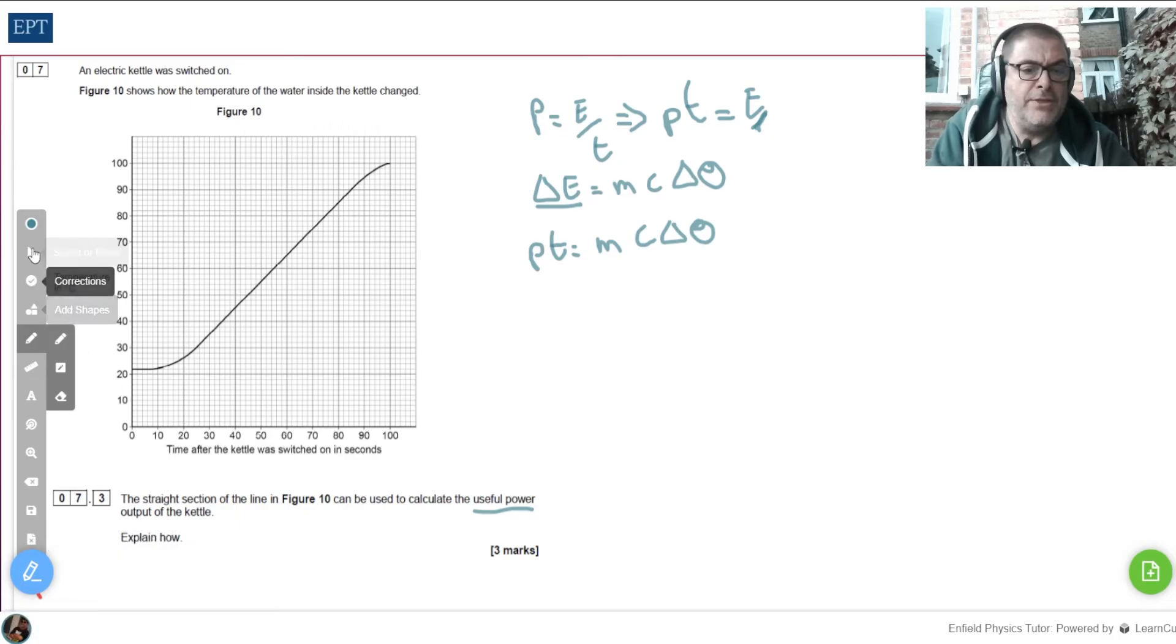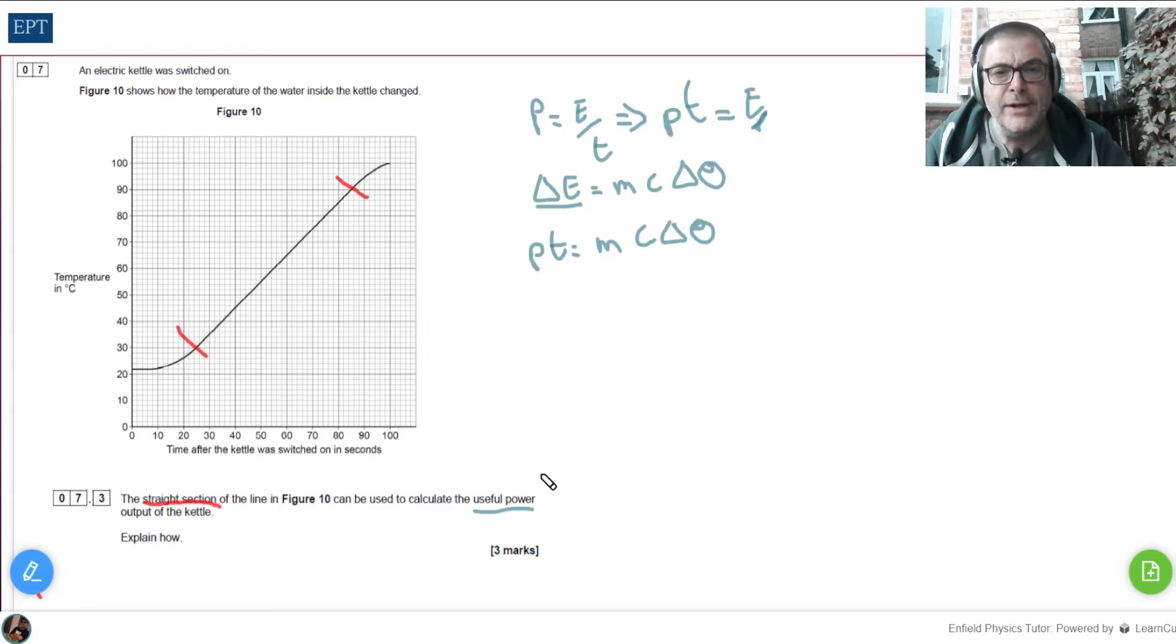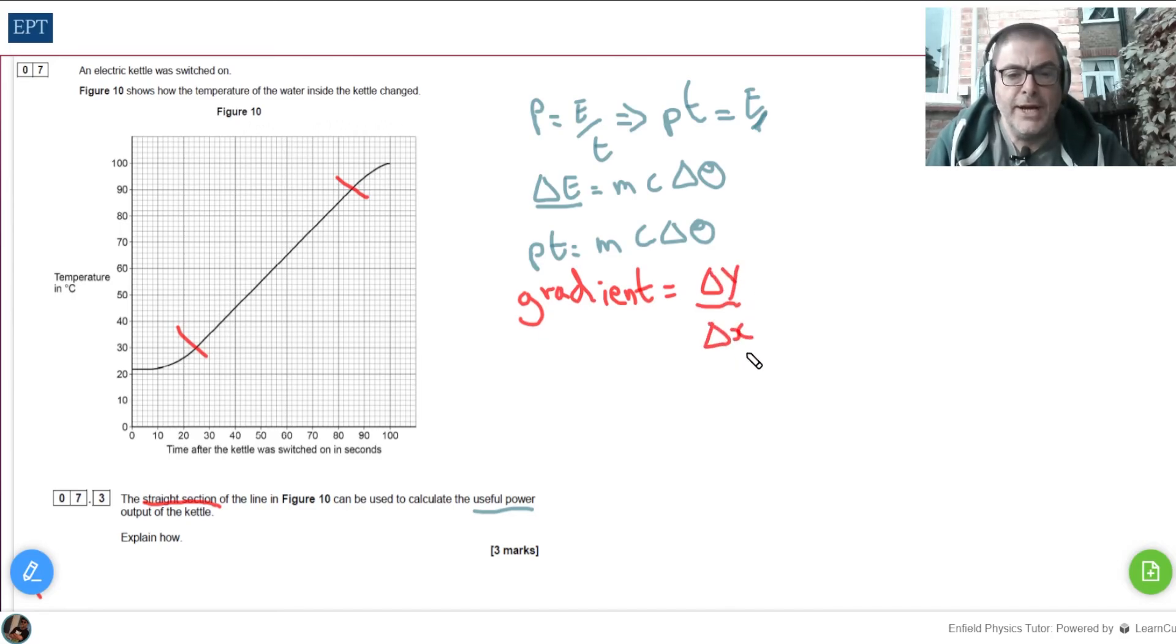Now we've got to think about this other thing in the question where it drew your attention to the straight line section. That's obviously this bit, isn't it, somewhere between roughly those two marks. Now whenever you see a straight line in a graph in physics, there are two things that are going to jump into your mind: is this proportional, maybe I should say directly proportional, and the other thing is what's the gradient? And in this case it's the gradient that's going to be useful. It actually says that, well not in as many words, but if you kind of get what they're saying, it's hinting at it. And you know that the gradient of any graph is the change in whatever is on the y-axis divided by the change in whatever is on the x-axis.